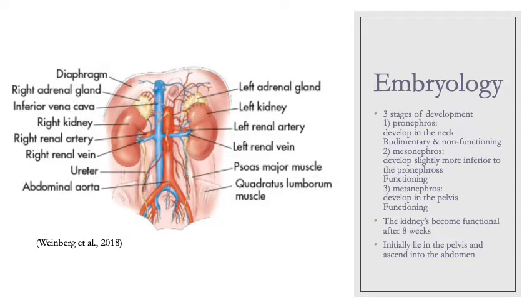We'll dive straight into embryology. When we talk about the development of the kidneys, we're also talking about the genital system because they develop closely together. That's why when there's an anomaly in one system it's really common for there to be an anomaly in the other. This lecture is going to focus mostly on the kidneys.